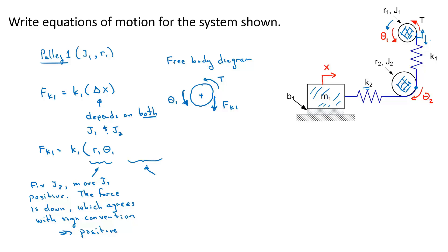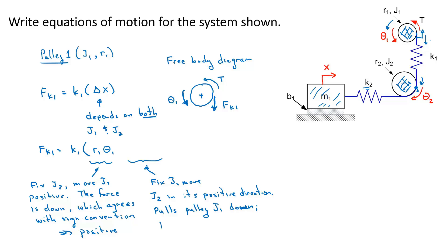For the second term, I fix J1 and find out what the motion of J2 — theta 2 — will contribute to that force. I move J2 in its positive direction. If I rotate this bottom pulley counter-clockwise, the bottom of the spring moves down, the spring gets longer, and the effect of the force on the upper pulley is down. That agrees with my passive sign convention, so this is also positive. So plus the translational distance, which is the radius of pulley 2, R2, times the angle that pulley 2 goes through, theta 2. So now we know the forces on the pulley: FK1, T is given, and we have a positive direction for theta 1. Let's apply Newton's second law in rotational form.